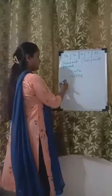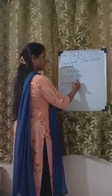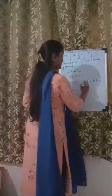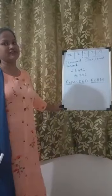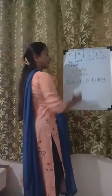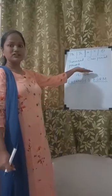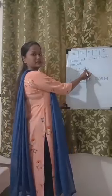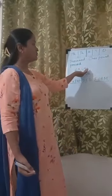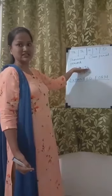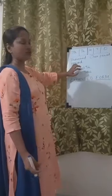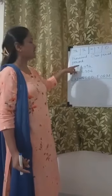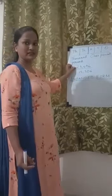Our next topic would be the expanded form. Before we understand expanded form, let us understand the place value and face value of a number. Taking the example of the same number 23,496: the place value of 6 is in the 1's place, so its place value is 6. 9 is in the 10's place, so the place value of 9 is 90. Place value of 4 would be 400 as 4 is in the 100's place. Place value of 3 would be 3,000 as it is in the 1,000's place. And place value of 2 would be 20,000 as it is in the 10,000's place.